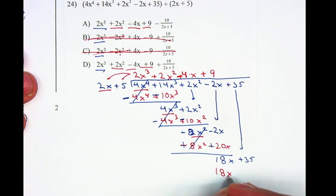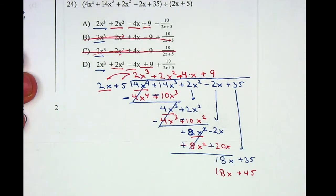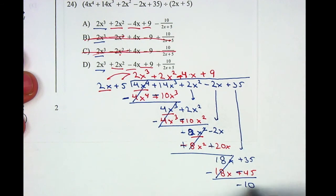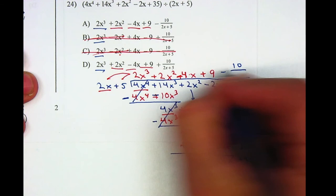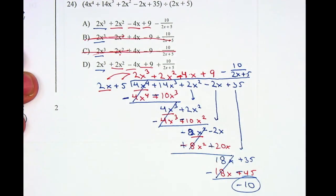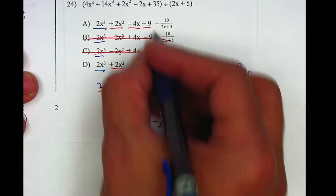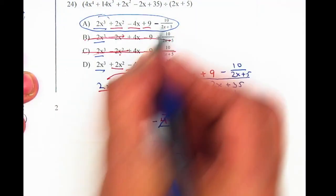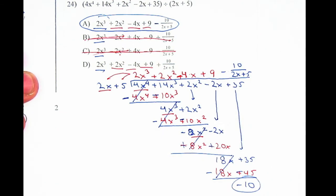9 times 2x gives 18x, and 9 times 5 gives positive 45. Subtract by changing to the opposite — that gives me negative 10. Negative 10 is my remainder, so it'll be minus 10 over the divisor 2x plus 5. Therefore, my answer is letter B.